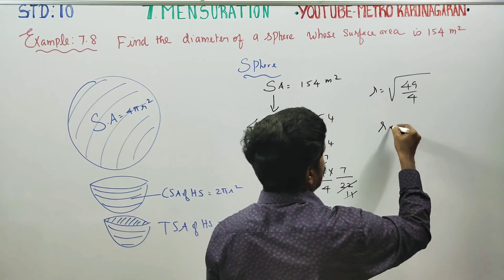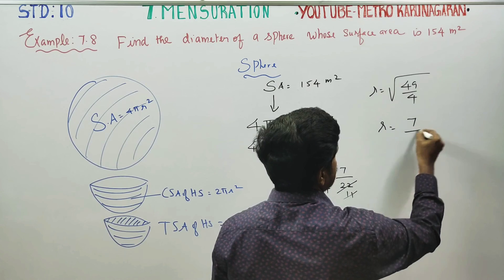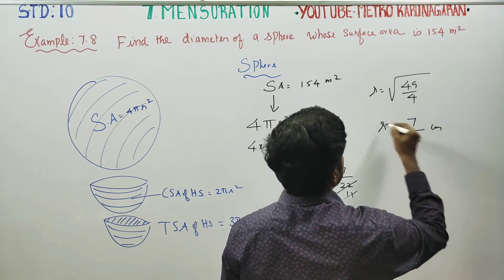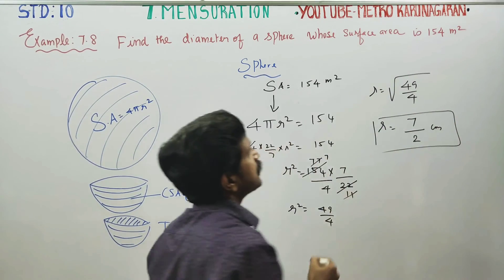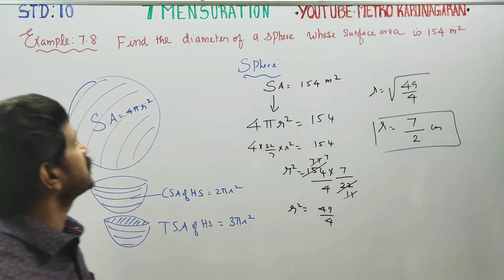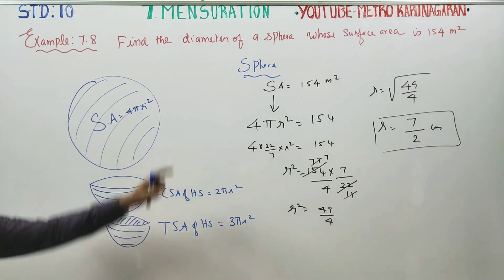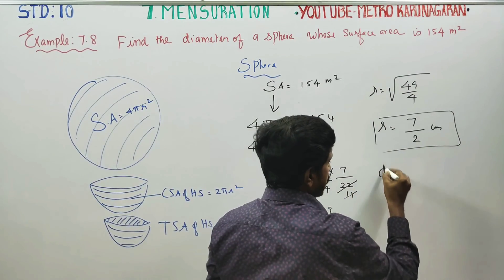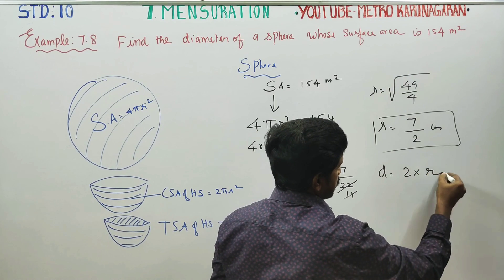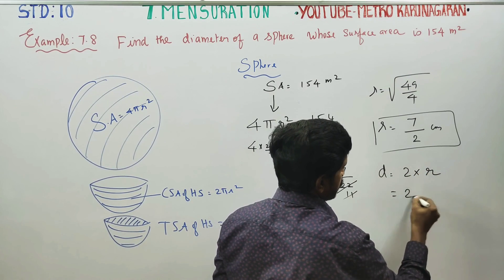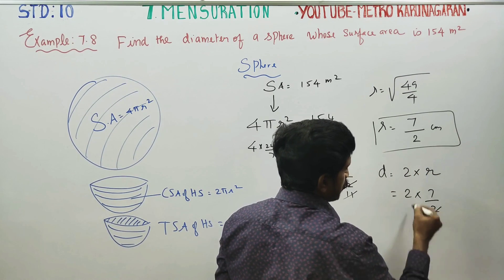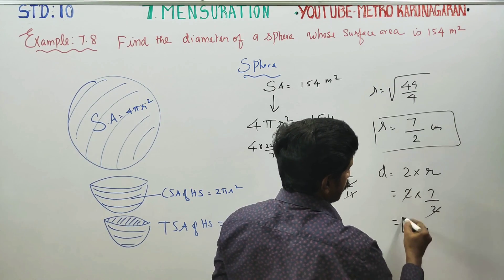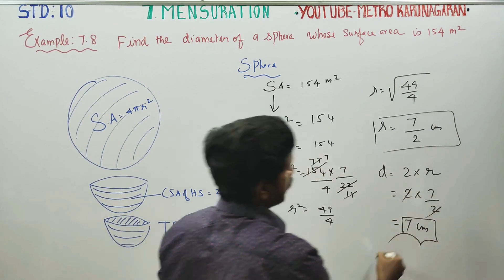Taking the square root: r = √(49/4). The square root of 49 is 7 and the square root of 4 is 2, so r = 7/2 cm. This is the radius. For the diameter: diameter = 2 × radius = 2 × (7/2). The 2 cancels, giving diameter = 7 cm.